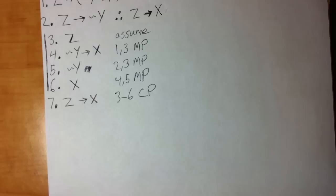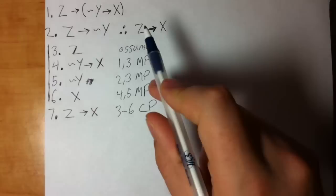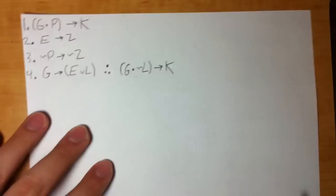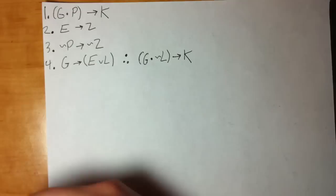As long as you stay focused on each of those three steps, it's really very simple. The hard part is when you get things out of order. The only thing that makes CP harder is making it more complicated to get from assuming the left side to getting the right side — and that's what this next problem is going to do. Same exact process, just a longer proof.